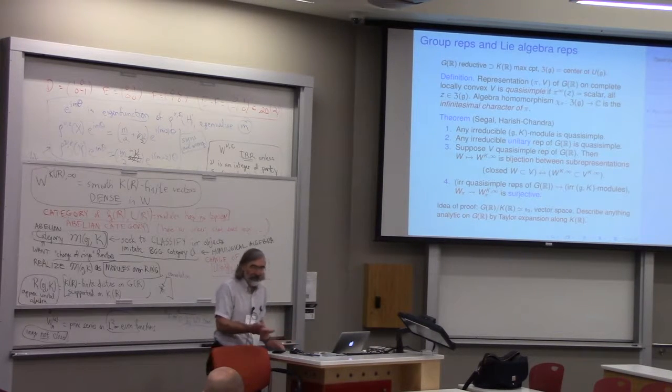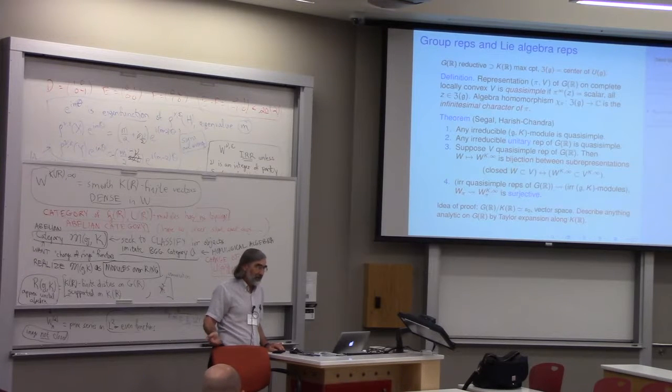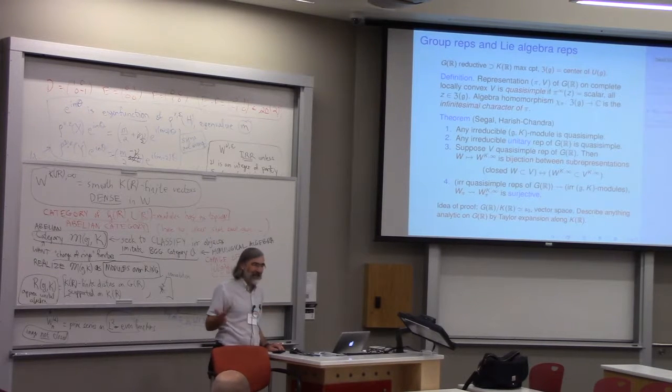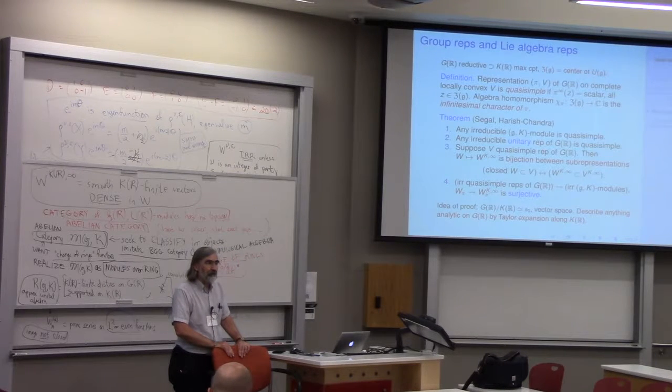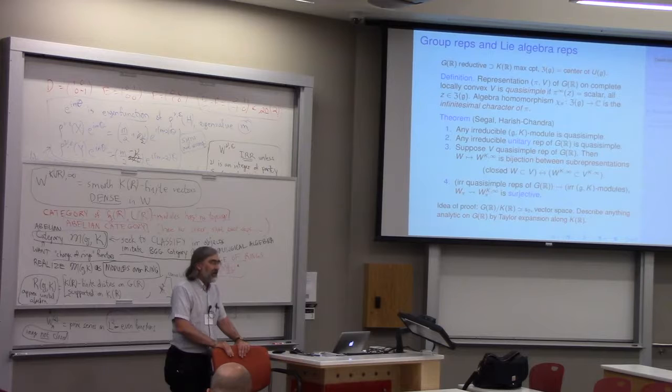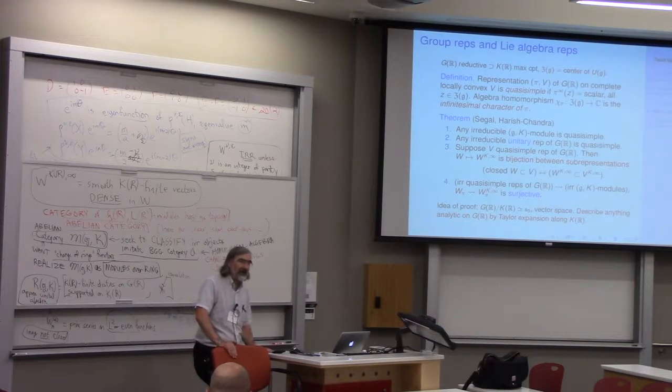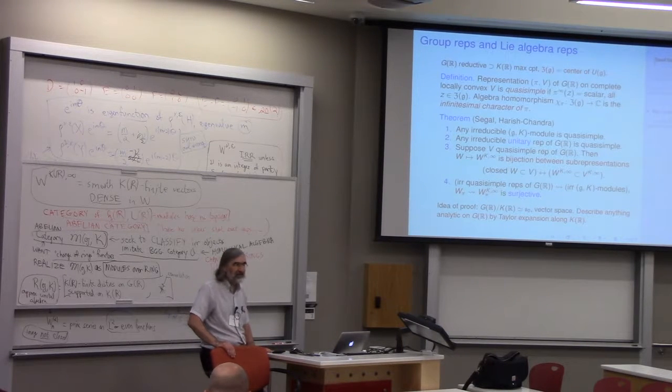The notion is the action of some enveloping algebra elements, and those are defined by differentiated group action, so it only makes sense on smooth vectors. Are K-finite vectors supposed to be smooth? That's correct. That's a consequence.